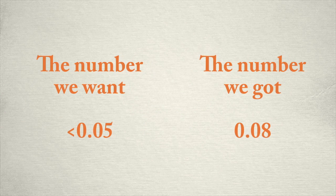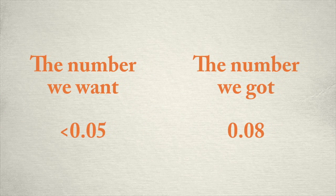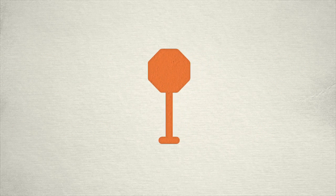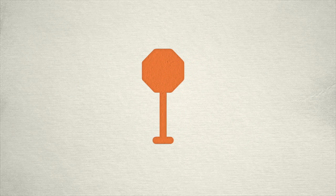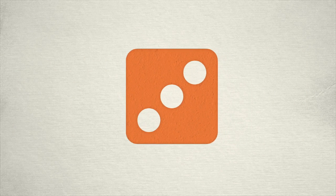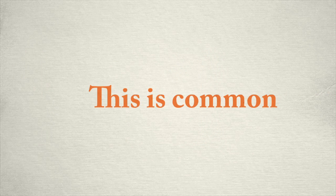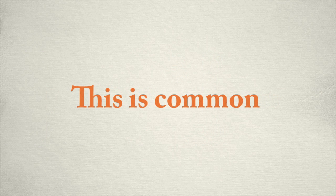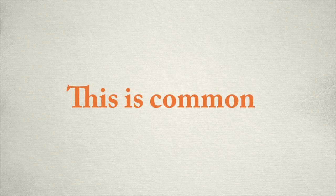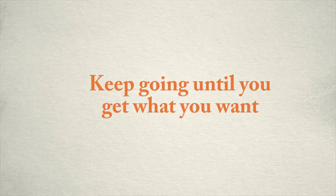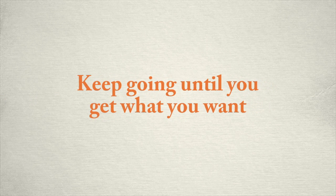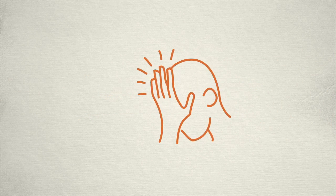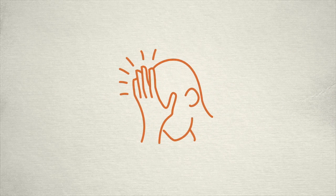In this case, the number that we want is really just anything under 0.05. But now let's imagine that we got a 0.08. Here, we as the researchers have a choice. Option one: stop there and report what was found. Option two: roll again. What many researchers decide to do in this instance is to run a second analysis. Maybe they'll change out a variable or perhaps exclude certain cases. It's really important to understand that this is no different than that Monopoly-losing child rolling the dice over and over again until they finally get the number that they want. So again, I beg of you, please don't do this.